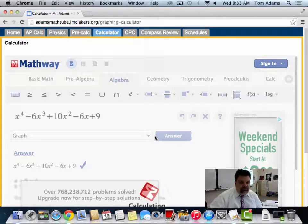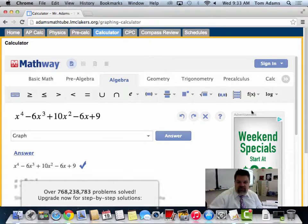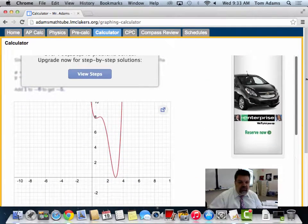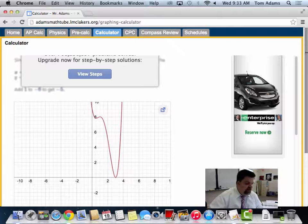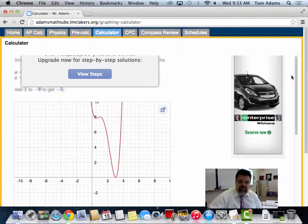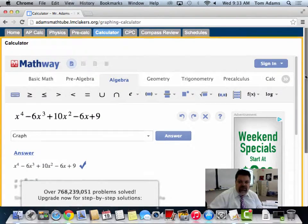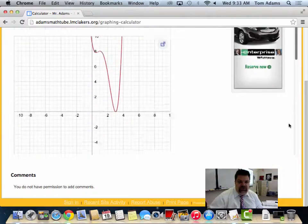So if I hit answer, I've got to scroll down to look at the graph. That's pretty much kind of what Mr. Adams said, right? That's how it should look. So that's what a graph looks like when it doesn't have real solutions.